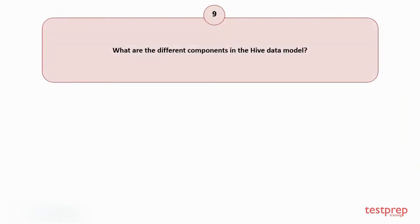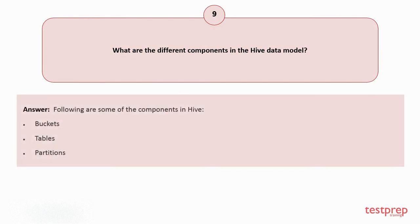Question number 9: What are the different components in the Hive data model? Your answer is: Following are some of the components in Hive. 1. Buckets. 2. Tables. 3. Partitions.